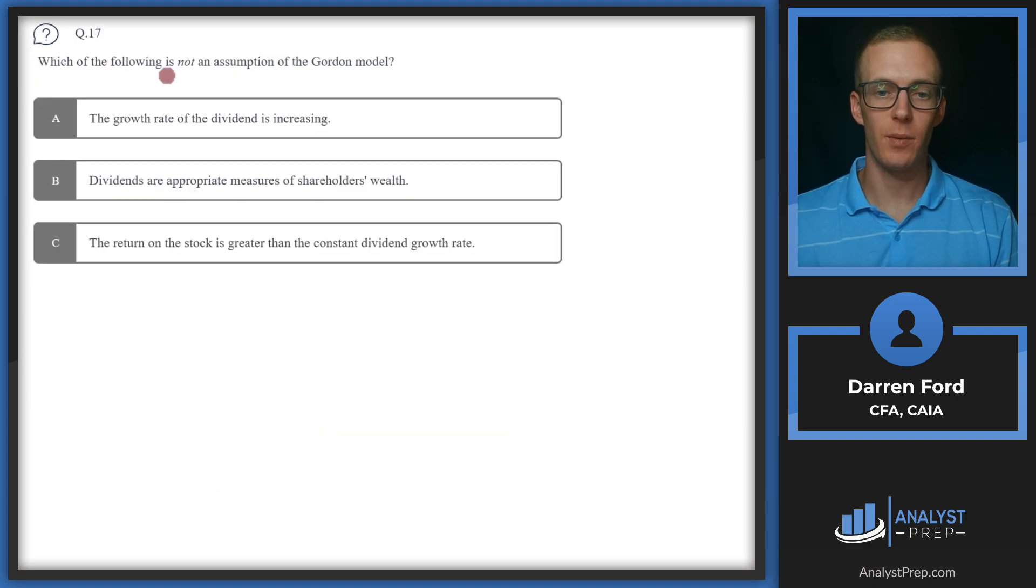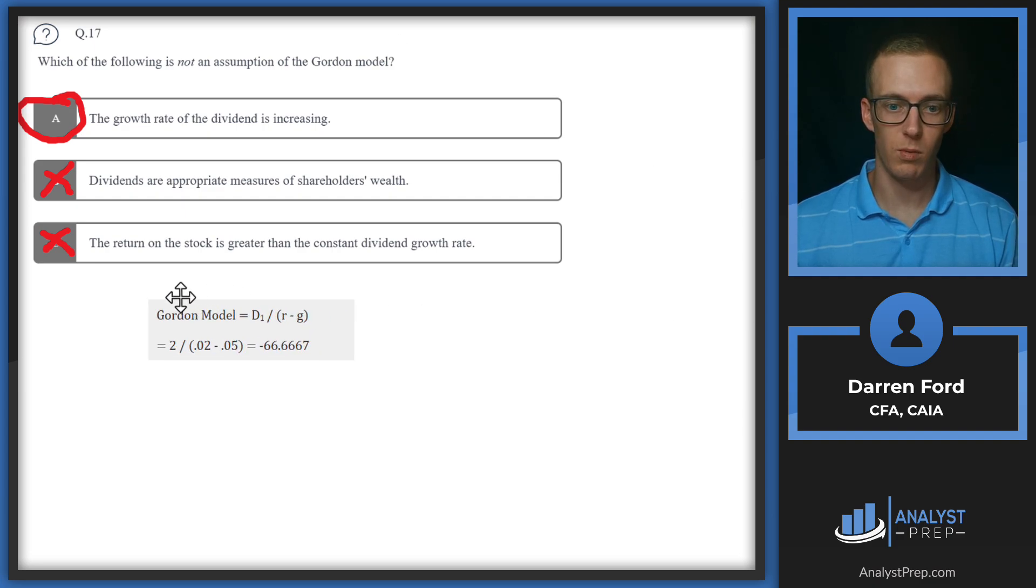Question 17. Which of the following is not an assumption of the Gordon Growth Model? A, the growth rate of the dividend is increasing. Right off the bat, this is actually going to be our answer. The assumption of the Gordon Growth Model is that the dividend rate is constant, so we can take a look at B and C here, but we're probably going to go with A. If we were using an increase in dividend rate, we'd have to use some type of multi-stage dividend model, not the Gordon growth model. B, dividends are appropriate measures of shareholders wealth. This is an assumption of the Gordon Growth Model. And C, the return on the stock is greater than the constant dividend growth rate. That is also an assumption.